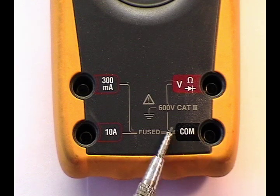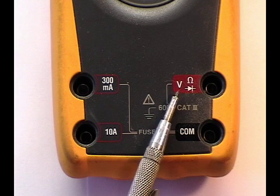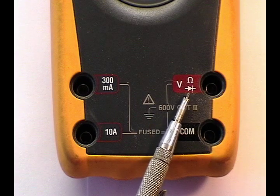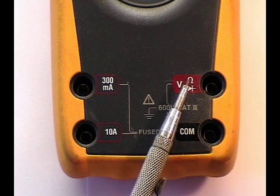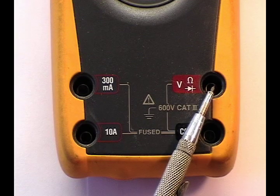Secondly, the common terminal connects through a volts, ohms, and diode measurement jack. This is used most commonly on the meter.